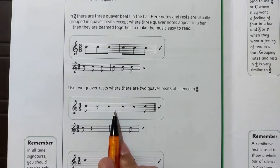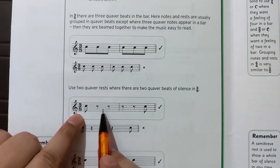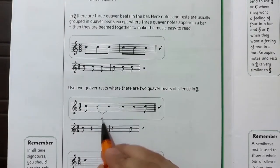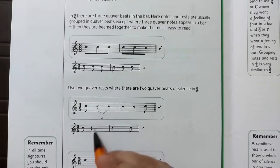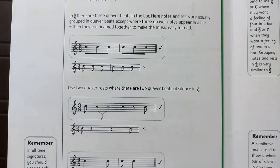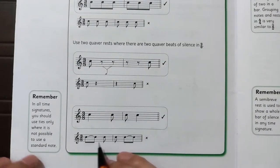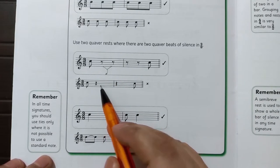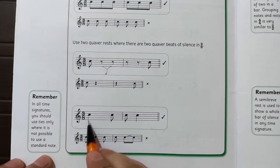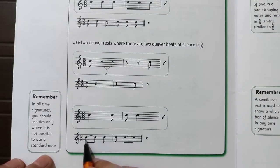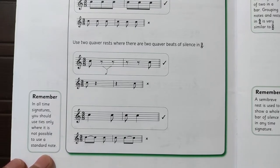Now, how to write rests in 3 by 8: if we have one quaver beat, then the next two should each be separate quaver rests — they cannot be combined into one crotchet rest. Even though two quaver rests equal one crotchet beat in value, we do not write a crotchet rest here. We have to write two separate quaver rests. However, you can beam two quaver notes together as a crotchet beat value if you are not tying them — writing them beamed together is correct.